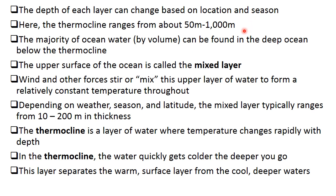The upper surface of the ocean is called the mixed layer. Wind and other forces mix this upper layer of water to form a relatively constant temperature throughout the year. Depending on weather, season, and latitude, the mixing layer typically ranges from 10 to 200m in thickness.